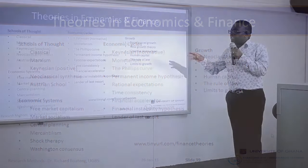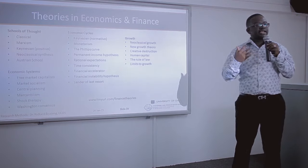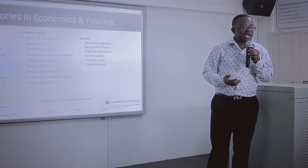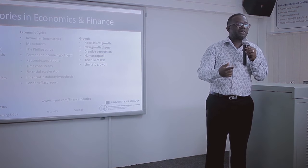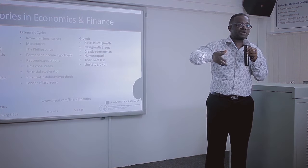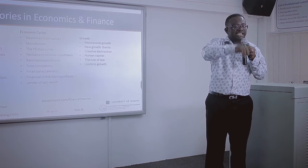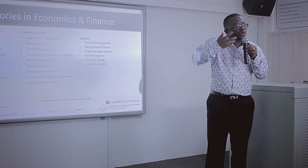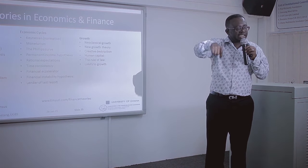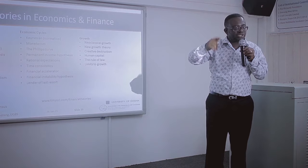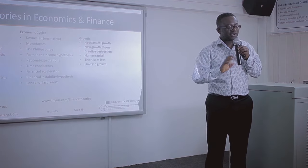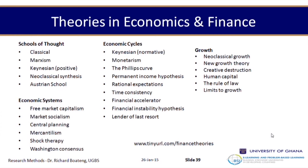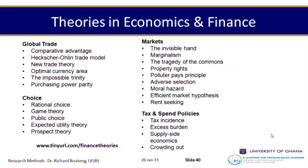Economic systems like capitalism operate at a different level — you cannot say an individual 'is capitalism,' but you can say a person 'is a capitalist' who practices what that economic system requires. Theories also cover global trade, markets, and tax and spending policies. In accounting, different theoretical approaches include the events approach, behavioral approach, human information processing approach, and predictive approach. For financial statement reporting, the value approach sees an income statement as an indicator of financial performance, while the events approach sees it as direct communication of operating events.